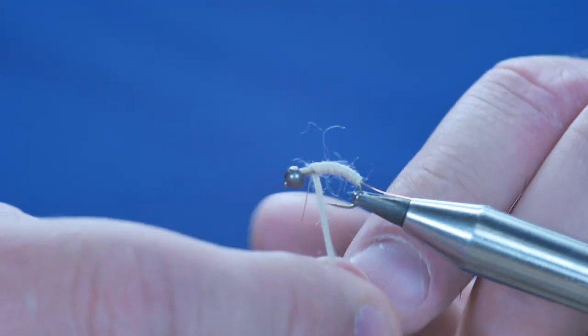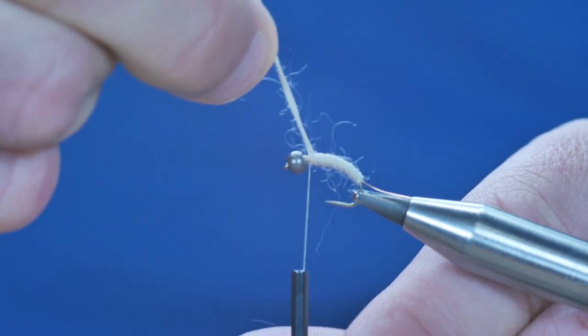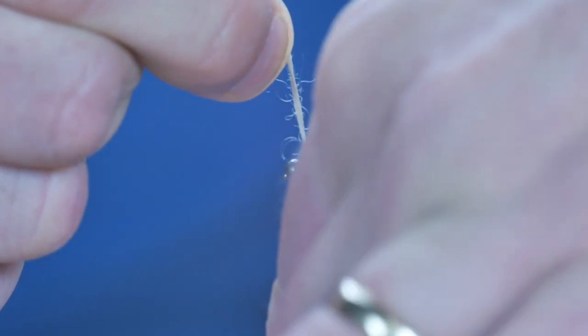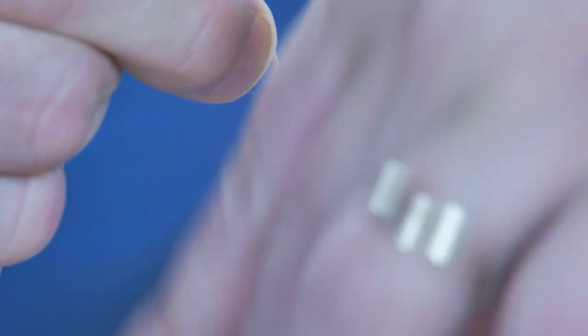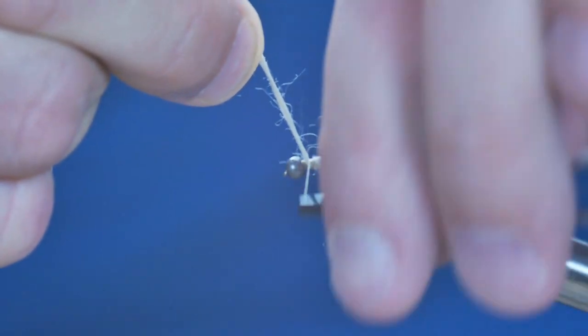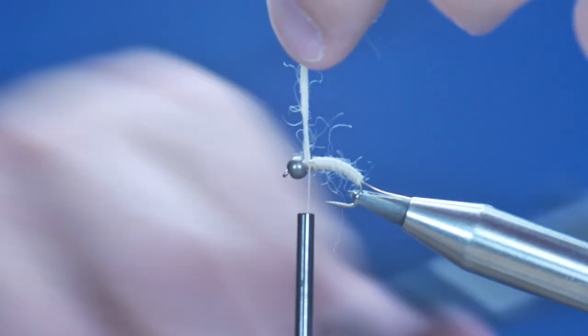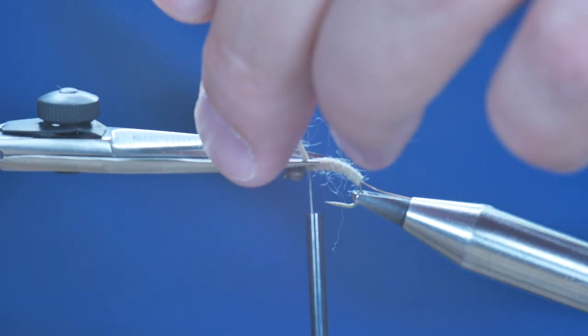Now I'm going to come back up to my thorax area, and that's as far as I need to take my wool. So I'm going to bring that over, two or three turns just to lock it into place, then I can come in with my scissors and take my waste away.